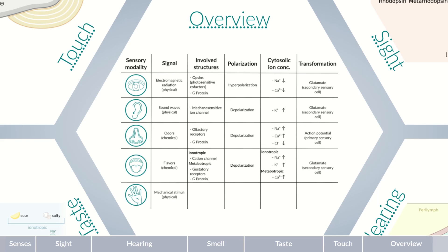The sense of touch detects mechanical stimuli by primary sensory cells with mechanosensitive cation channels. Their opening positively polarizes the cell interior, leading to the opening of voltage-gated ion channels and an influx of mainly sodium and calcium ions, causing the cell to depolarize. An action potential is formed and transmitted to downstream neurons.